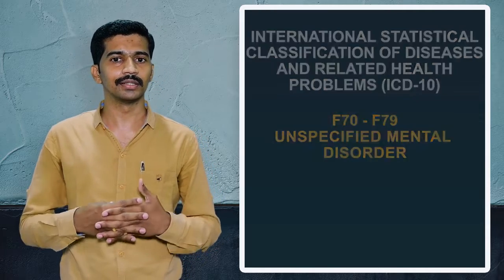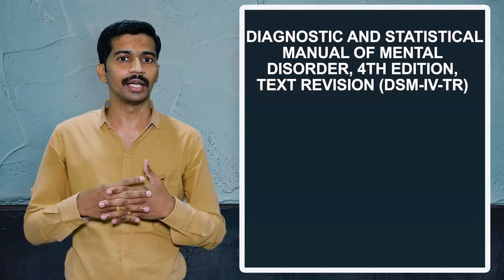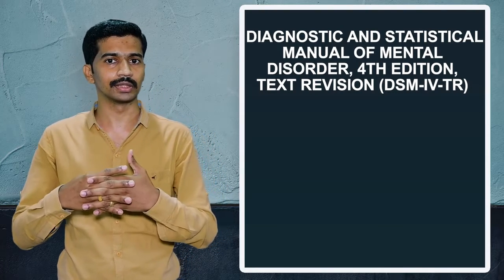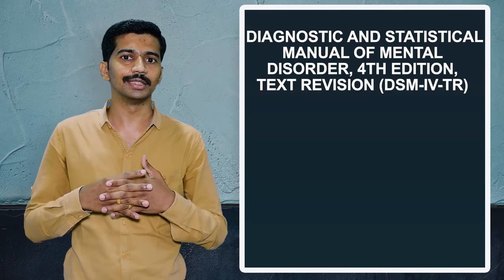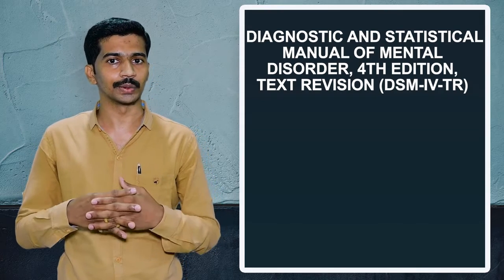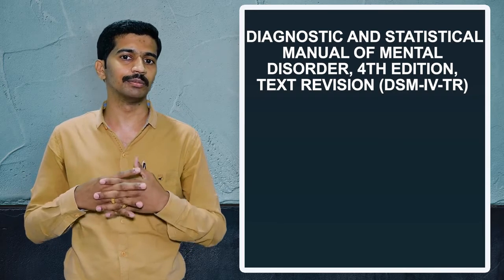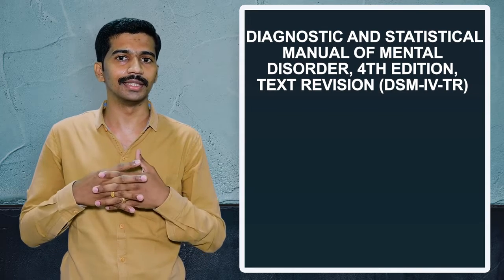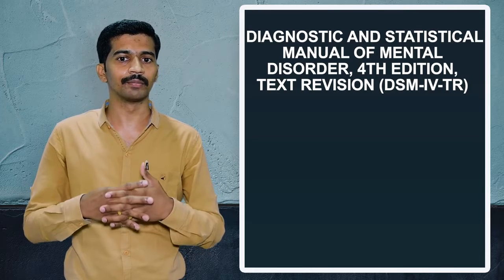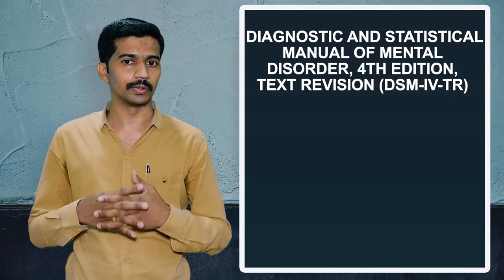The second classification is DSM, which stands for Diagnostic and Statistical Manual of Psychiatric Disorder. This is mainly given by the American Psychiatric Association. In the United States of America, US-based hospitals are following this DSM classification. Currently we are following the DSM-IV text revision, which was given in the year 2000.